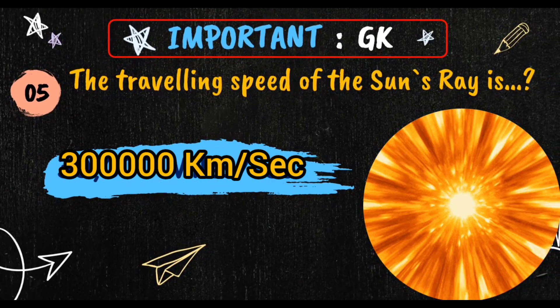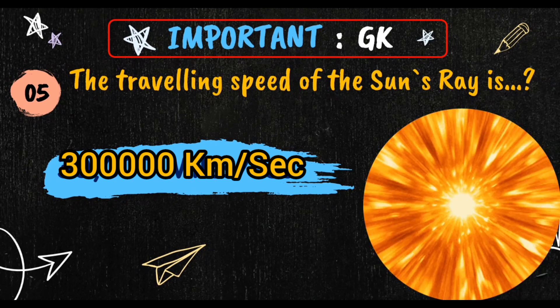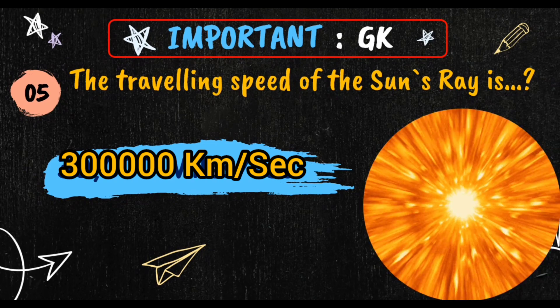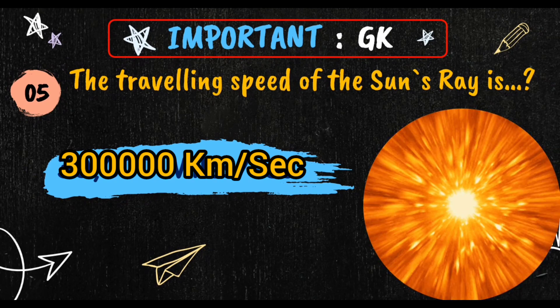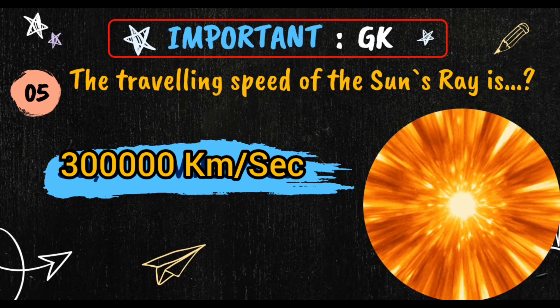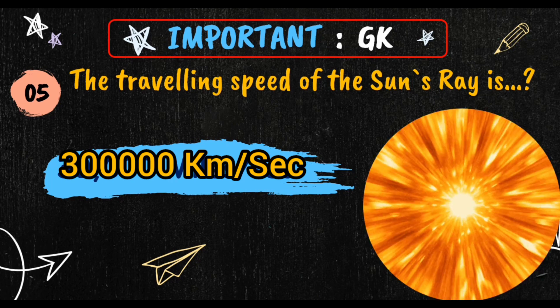The sun rays, which refers to sunlight, travel at the speed of light, which is approximately 3 lakh kilometers per second.